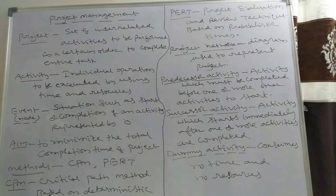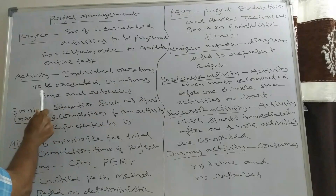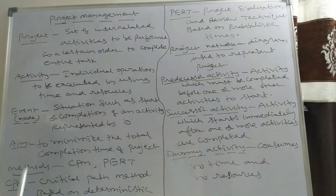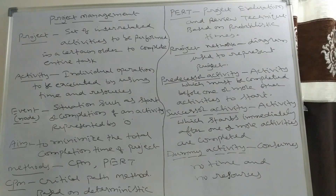What is an activity? An activity is an individual operation to be executed by using time and resources. For example, in that project, construction of walls is an activity. Construction of foundation is an activity. So activity means an individual operation to be executed by using time and resources.